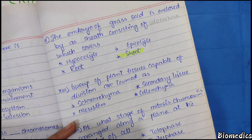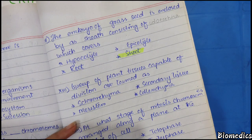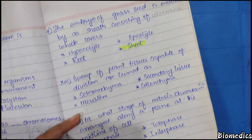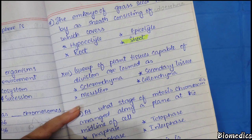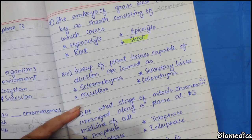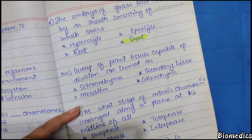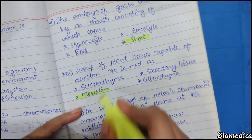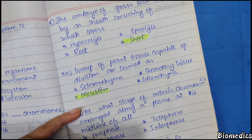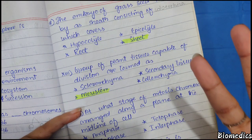Groups of plant tissues capable of division are termed meristem. There are three types: apical, lateral, and intercalary meristem.